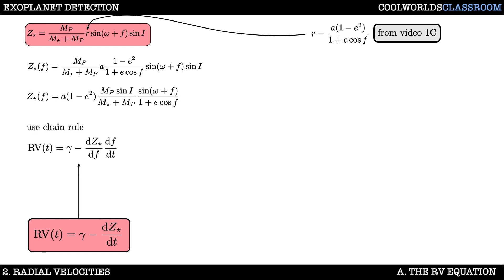Now let's go back to the rv equation and expand it using the chain rule. This helps us because we can't directly differentiate z with respect to time, but we can do so with respect to true anomaly f. The df/dt term is again something that we derived earlier in video 1e, so we can now just use that result here too.